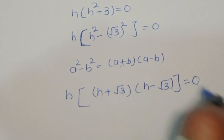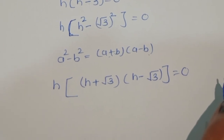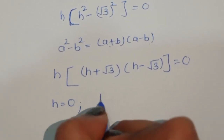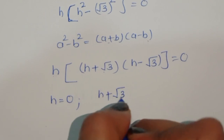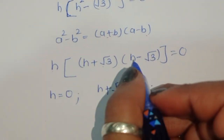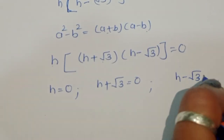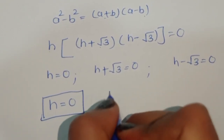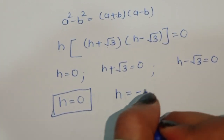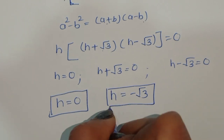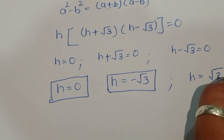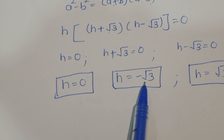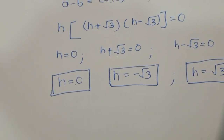So we have h times (h plus square root of 3) times (h minus square root of 3) equals 0. This gives three solutions: h equals 0, h plus square root of 3 equals 0 giving h equals negative square root of 3, and h minus square root of 3 equals 0 giving h equals square root of 3.